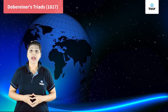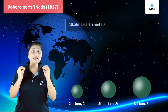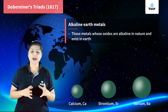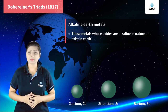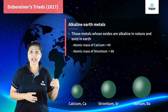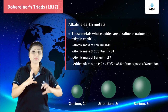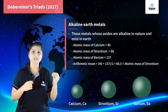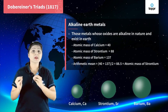Another group made by Döbereiner had calcium, strontium, and barium — these are called alkaline earth metals, meaning metals whose oxides are alkaline in nature and are found in the earth. Calcium's atomic mass is 40, strontium's is 88, and barium's is 137. Taking the arithmetic mean of calcium and barium: (40 + 137) / 2 = 88.5, which is approximately equal to the atomic mass of strontium. So this is again a Döbereiner's triad.